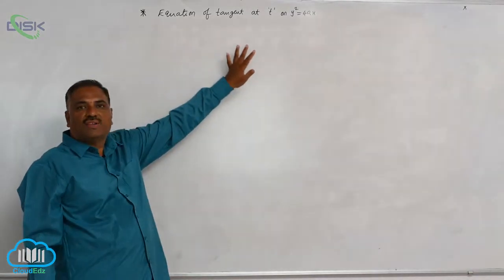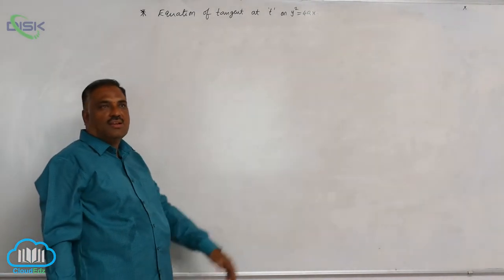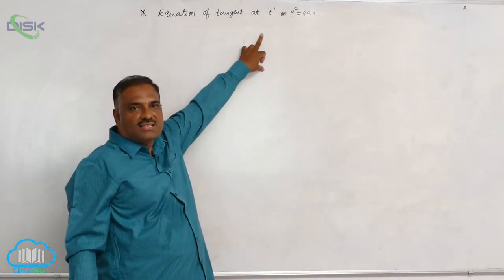We will discuss the equation of tangent at t on the parabola y square equal to 4ax. Here, t indicates parameter as we discussed earlier.